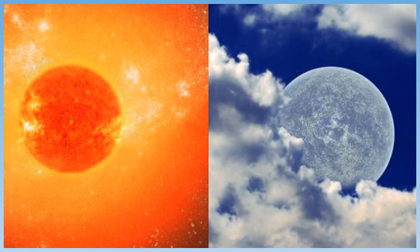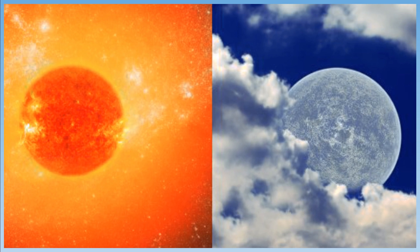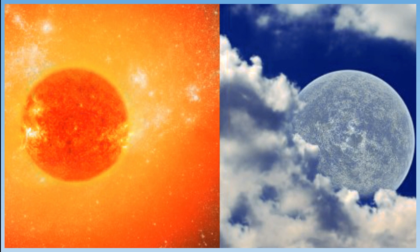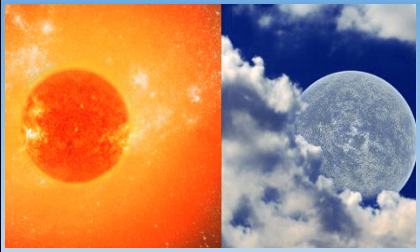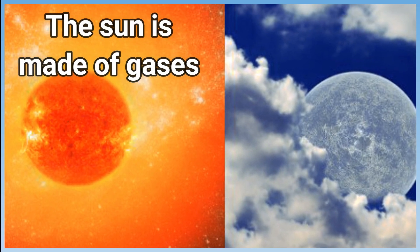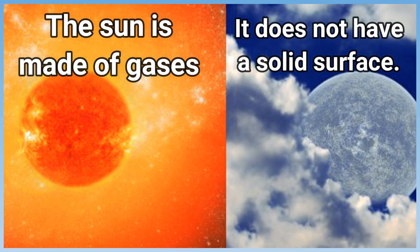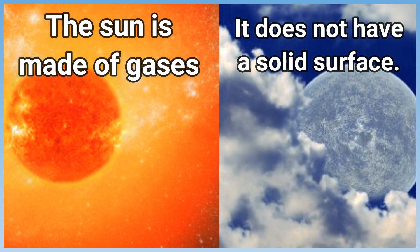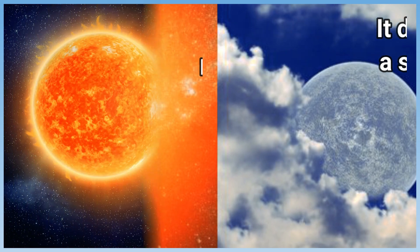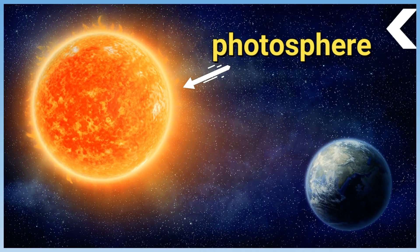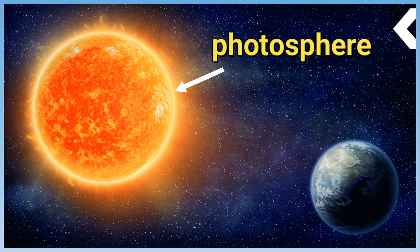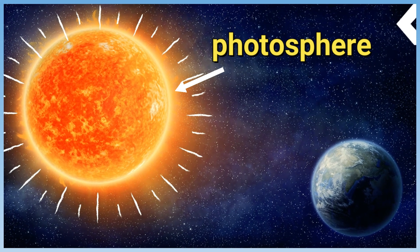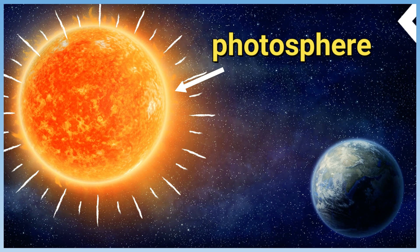A common misconception is that the surface of the sun is solid, like the moon. This is not accurate. The sun is made of gases — it does not have a solid surface. The part that looks like the surface is called the photosphere. It is simply the region of gas on the edge of the sun that gives all the light that we can see.